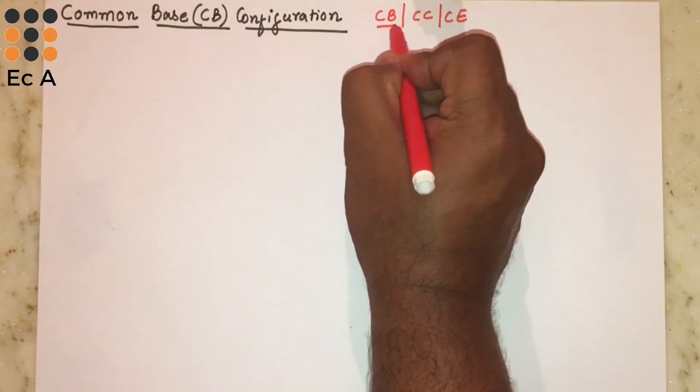In this lecture we will understand the common base configuration. To write the circuit, let us consider a PNP transistor. To bias this transistor, the emitter-base junction should be forward biased and the collector-base junction should be reverse biased. We will connect a resistor RE across the emitter terminal, and since it is a P region at the emitter terminal, we connect positive; the N region is connected to negative.